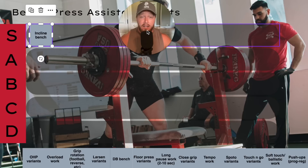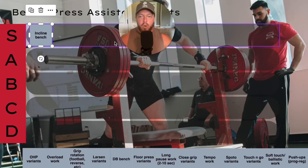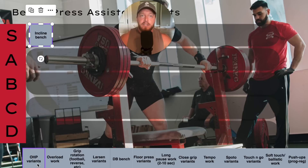I did a meet right after working with Dylan and doing all the incline work. I had a grinder bench press where I got stuck halfway up because I misgrooved it, and the only reason I was able to finish it was all the incline work. It also works your pec minor, your triceps, and your serratus anterior in the synergy of protraction to really help with lockout strength. Incline is definitely S tier — it's something I literally use with all my clients at some point.